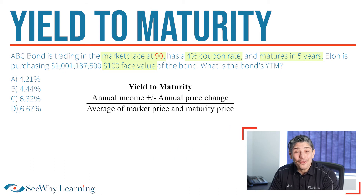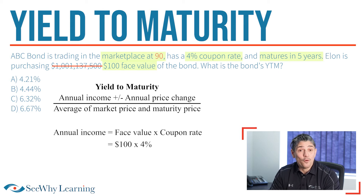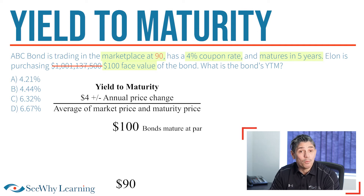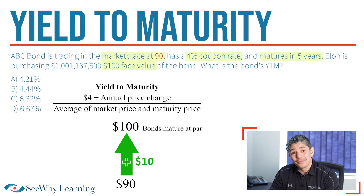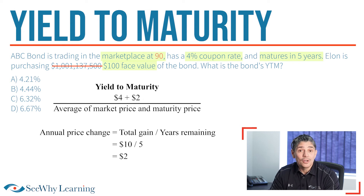Alright, let's fill out the formula, starting with the top. If Elon has a $100 face value of the bond and it pays a 4% annual coupon, that would be $4 per year. If the bond is trading at $90 and will mature at $100 — which is the face value amount that the issuer borrowed — that represents a gain of $10, so we put a plus sign. The total gain over the life of the bond is $10, so we divide that by the five years remaining until maturity and get an annual gain of $2. To recap, on the top of the formula we have $4 plus $2 for a total of $6.